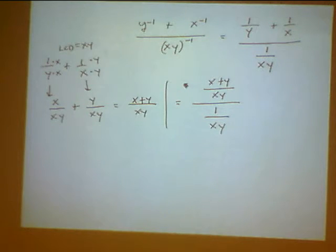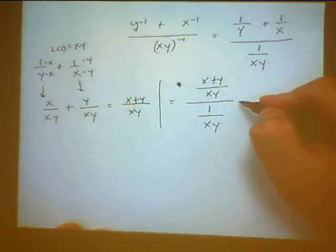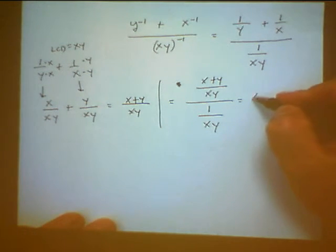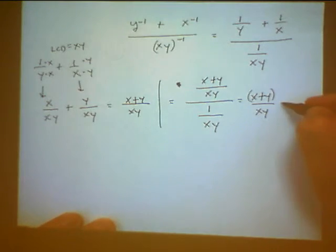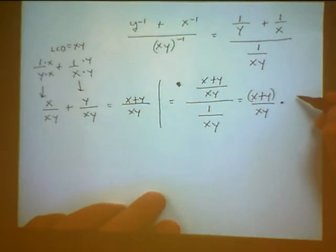So at this point, it's pretty straightforward. You take the top fraction, and you multiply it by the reciprocal of the bottom fraction.